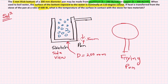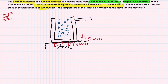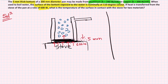If you put your pan on the stove, heat enters through the bottom surface coming up to the top surface. The thickness of the pan is 5 mm, or 0.005 m.